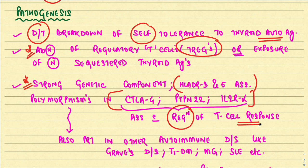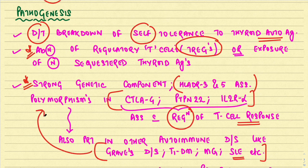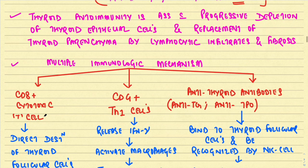Polymorphisms in CTLA-4, PTPN-22, and interleukin-2 receptor alpha genes are associated with the pathogenesis of Hashimoto's thyroiditis — genes normally associated with regulation of T cell response. Many other disorders involving breakdown of self-tolerance, like Graves' disease, type 1 diabetes mellitus, myasthenia gravis, SLE, and Sjögren's syndrome, may also show these same polymorphisms. Thyroid autoimmunity leads to progressive depletion of thyroid follicular cells and replacement by lymphocytic infiltrates and fibrosis.